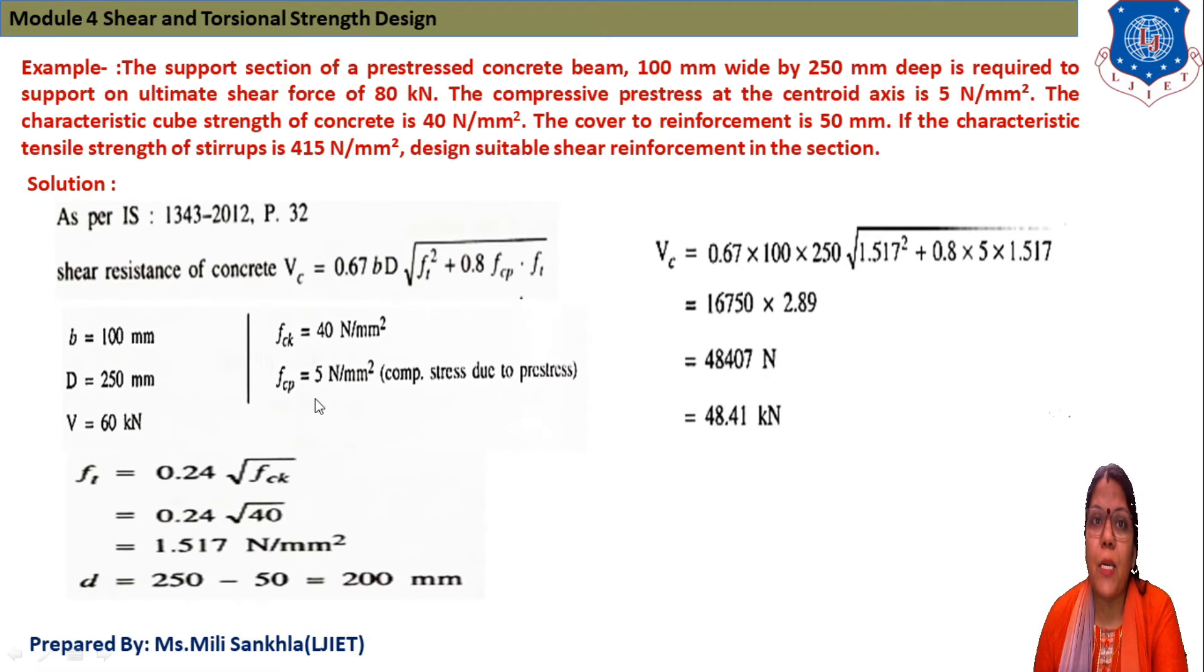fcp is given as 5 N/mm², width b is 100 mm, depth D is 250 mm, and V is 60 kN. Now we put the values.